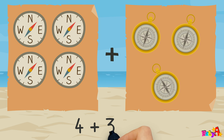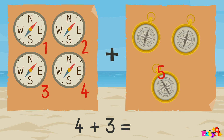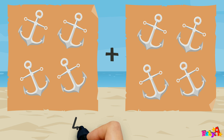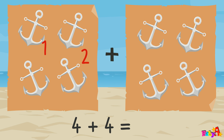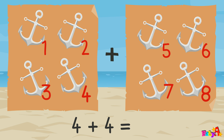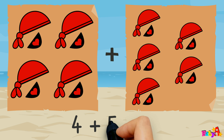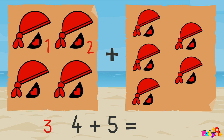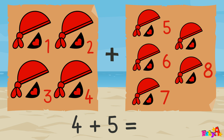4 plus 3 equal 1, 2, 3, 4, 5, 6, 7 — 7. 4 plus 4 equal 1, 2, 3, 4, 5, 6, 7, 8 — 8. 4 plus 5 equal 1, 2, 3, 4, 5, 6, 7, 8, 9 — 9.